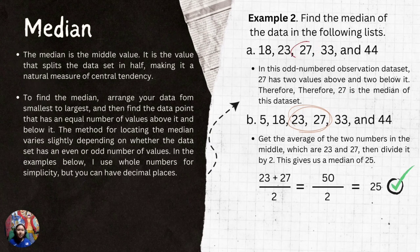To find the median, arrange your data from smallest to largest, and then find the data point that has an equal number of values above and below it. The method for locating the median varies slightly depending on whether the data set has an even or odd number of values. In the examples below, I use whole numbers for simplicity, but you can use decimal places as well.